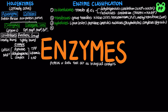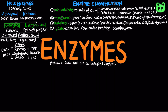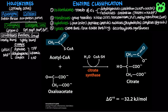Lyases catalyze bond cleavage by leaving double bonds or rings. They can also catalyze the reverse reaction of adding groups to double bonds. Examples include various decarboxylases such as pyruvate decarboxylase, which cleaves pyruvate into acetaldehyde and carbon dioxide, playing a role in alcohol fermentation. Another type of lyases are various synthases such as citrate synthase, which combines acetyl-CoA and oxaloacetate to create citric acid during the citric acid cycle.